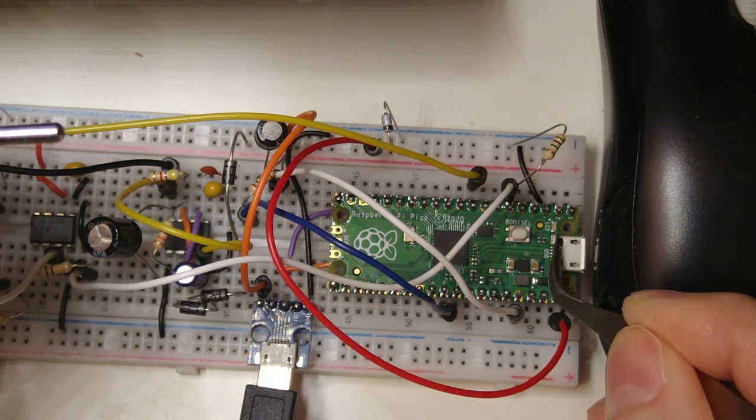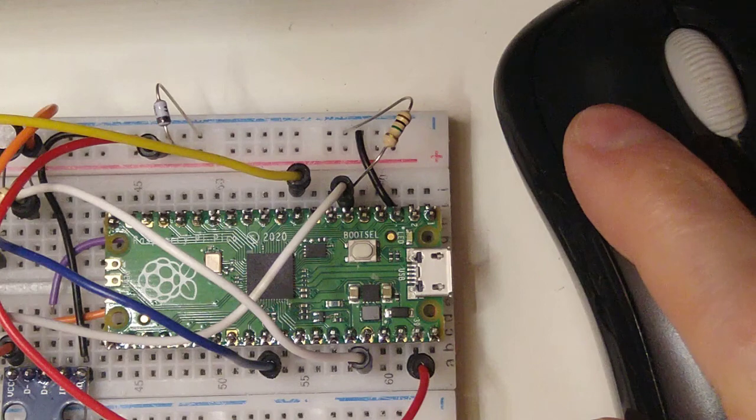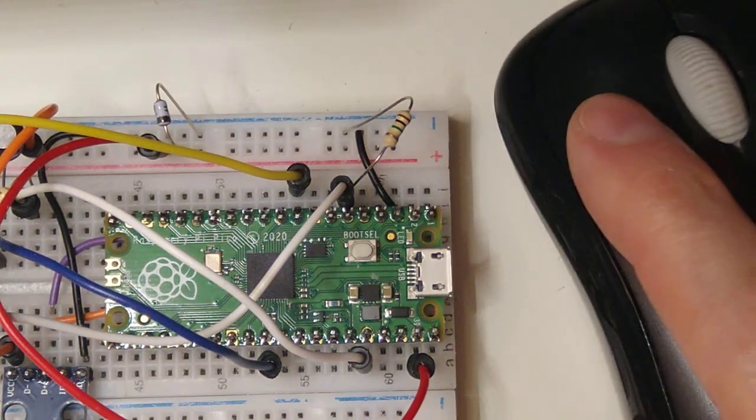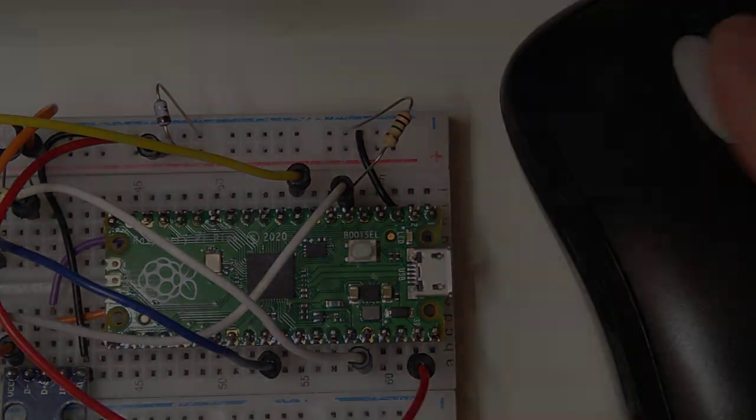It should pulse, but the light is deliberately very dim to save power. When we move the mouse, the Pico parses the USB data and makes the LED blink even faster.